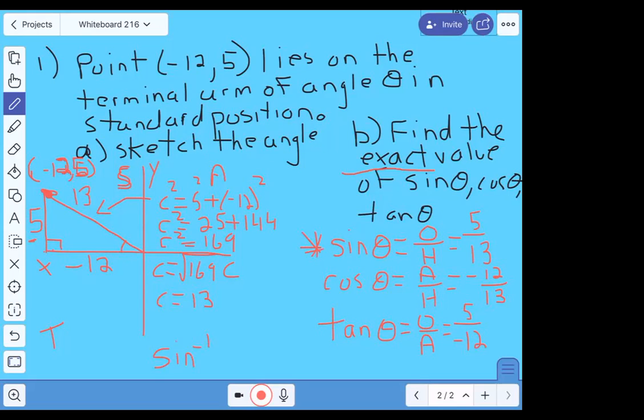So if I do sine inverse of 5 divided by 13, and I put that into my calculator, that's going to give me a value pretty close to, oh, I don't know, 25 degrees or something like that. I don't have my calculator here, but we're doing it the same way as we always have. It's just using the sine inverse once you have the sine or the cosine or the tangent for your ratios.